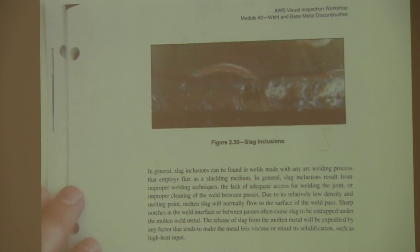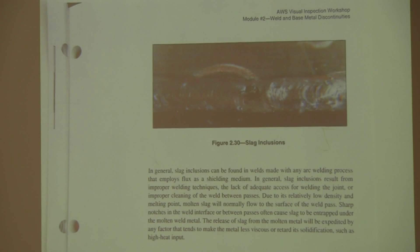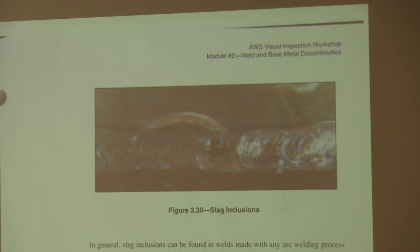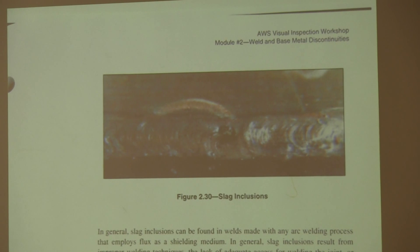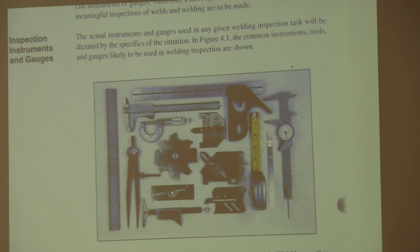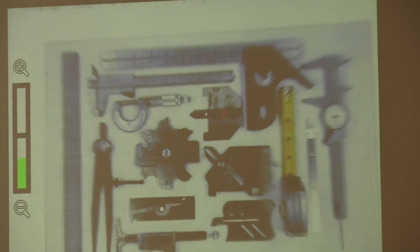You can also have slag inclusions — basically something that's non-metallic, a piece of slag, or it could be a piece of tungsten which is metallic but isn't supposed to be there. It's anything that gets included in the metal that's not supposed to be there. We are pretty much out of time, but I just wanted to show you a few of the tools that are used as well.